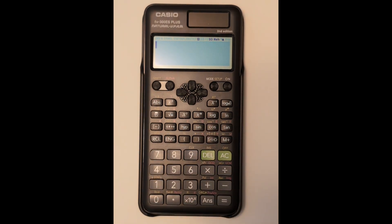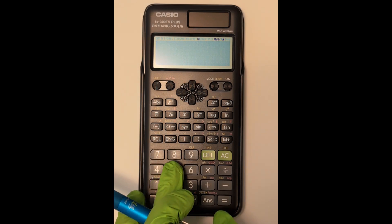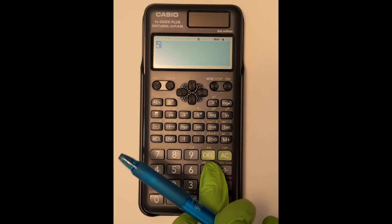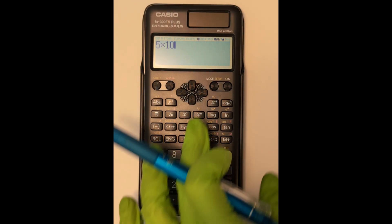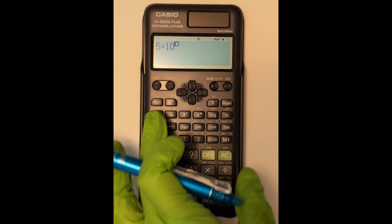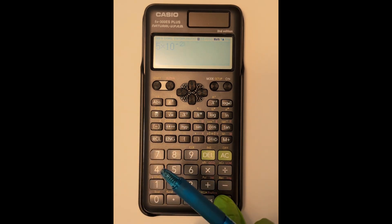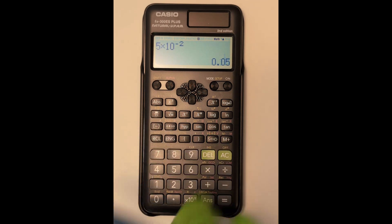Now let's look at numbers and scientific notation. Let's say you have 5 times 10 to the negative 2 and want to see its standard notation. Just enter the value, press equal, and if it shows you a fraction, press the SD button to get the decimal form.